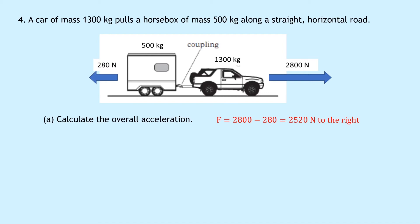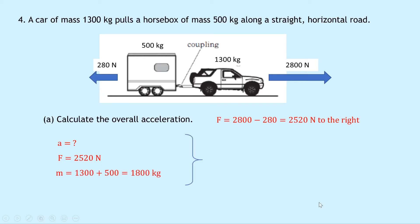Writing down what we know: the unbalanced force is 2,520 Newtons, and the total mass of the system is 1,300 plus 500, which equals 1,800 kilograms. Using Newton's second law, F equals MA, rearranging for A gives A equals F over M. Substituting: 2,520 divided by 1,800 gives an answer of 1.4 meters per second squared.